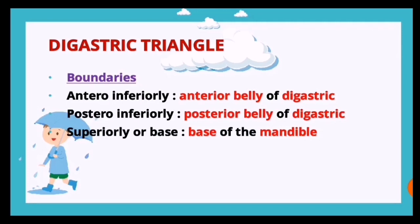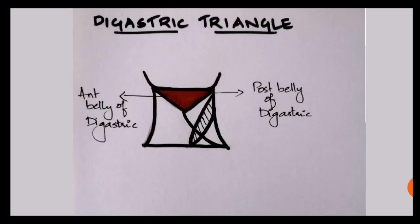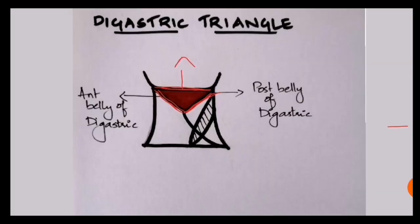Now the second triangle is the digastric triangle. The boundaries are: antero-inferiorly you have the anterior belly of digastric, postero-inferiorly you have the posterior belly of digastric, and superiorly the base is the base of the mandible - unlike the submental triangle where the base was the hyoid bone.